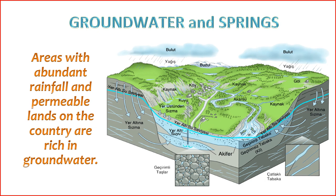6. Land Use and Urbanization — human activities, such as urbanization and land use changes, can alter natural groundwater recharge patterns. Paved surfaces reduce infiltration, leading to increased runoff and reduced groundwater recharge. 7. Human Extraction — the extraction of groundwater for agriculture, industrial, and domestic purposes affects groundwater levels. Over-extraction can lead to groundwater depletion and reduce spring discharge.